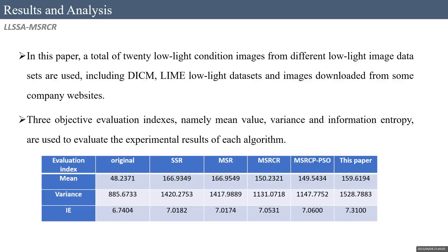In this paper, three objective evaluation indexes — mean value, variance, and information entropy — are used to evaluate image enhancement effects. The mean value reflects the overall brightness of the image; the larger the mean value, the higher the brightness. The variance reflects the richness of gray levels; the larger the variance, the higher the contrast and the more obvious the detail. Image information entropy reflects the amount of image information stored. As can be seen from the objective evaluation indexes in the table, the five image enhancement algorithms all improved low illumination images to a certain extent, and the algorithm in this paper has the most obvious enhancement effect.